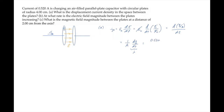So we get a displacement current density of the current 0.520 amps divided by the plate area, that's π times the radius squared. When you calculate, you find it equals 103 amps per square meter.